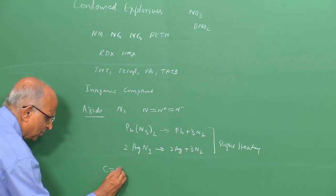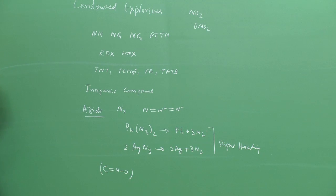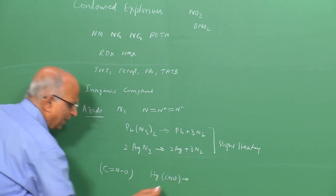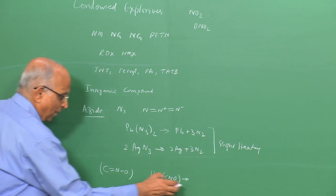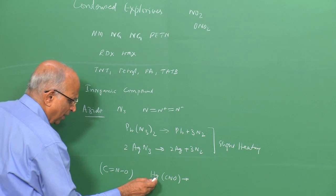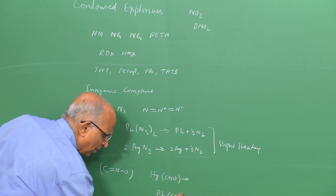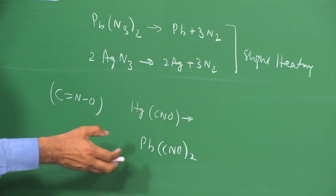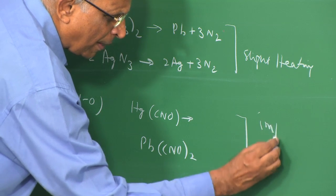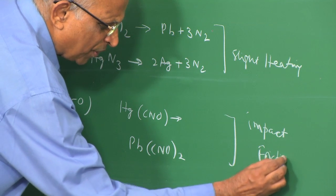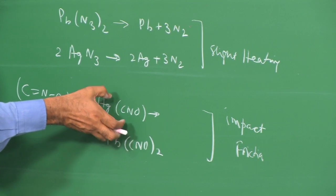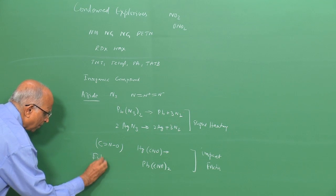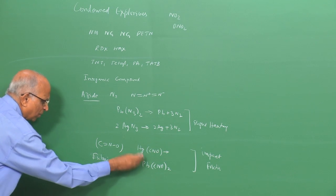It decomposes readily, and even slight heating is sufficient to cause compounds containing azide - like lead azide and silver azide - to rapidly decompose and give out heat, making them explosives. Explosives based on the azide radical include not only azides but also the fulminate radical, the CNO radical. With mercury you form mercury fulminate (CNO), which again dissociates. We have mercury fulminate and lead fulminate as examples.